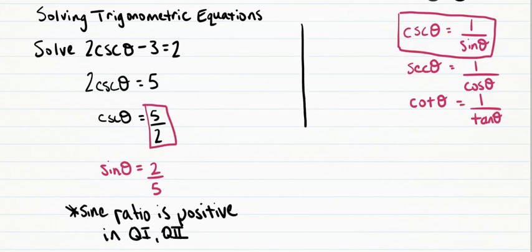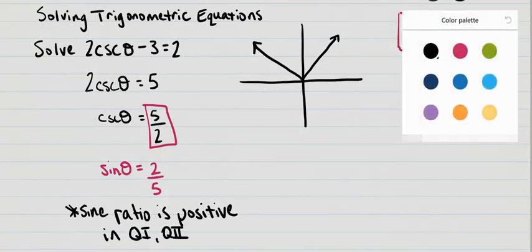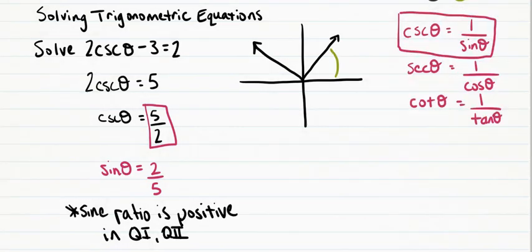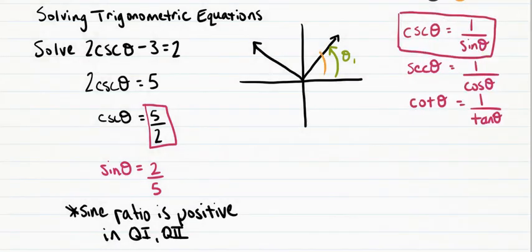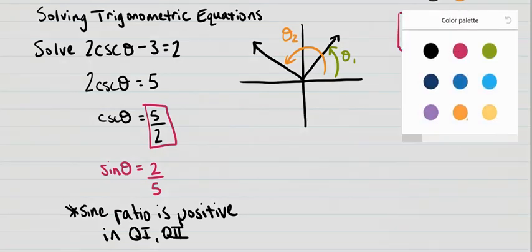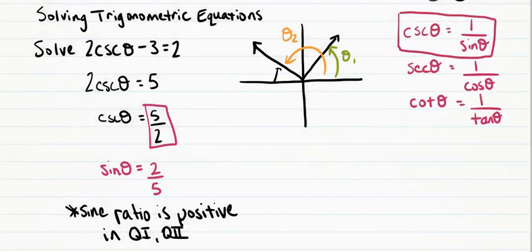When we draw our possible angles for the solutions for theta in the Cartesian plane, we're going to have one possible solution in quadrant 1 and one possible solution in quadrant 2. I'm going to call this first one in quadrant 1 theta 1 and the second solution in quadrant 2 theta 2, and both of them would have the same value of beta as shown in the diagram.